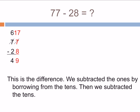So here's the actual problem. Subtract the ones. We can't take 8 away from 7, so we borrow one of the tens and we make 17. 17 minus 8 is 9. And then we only have 6 tens left, so 6 minus 2 is 4. So the answer, the actual answer is 49.